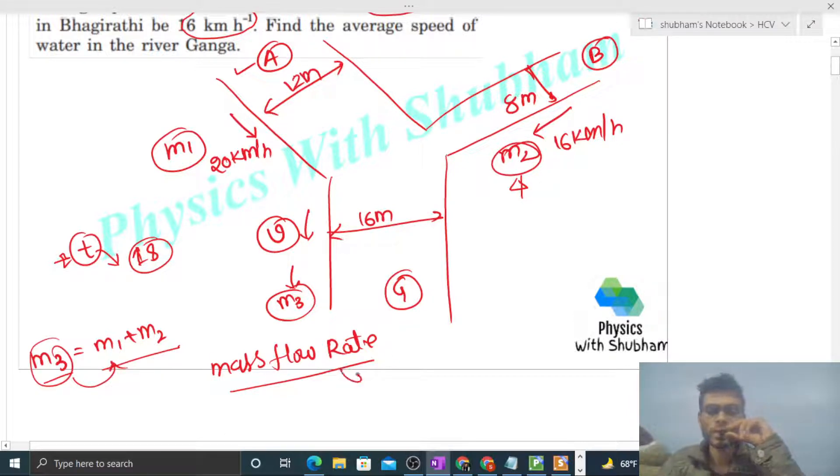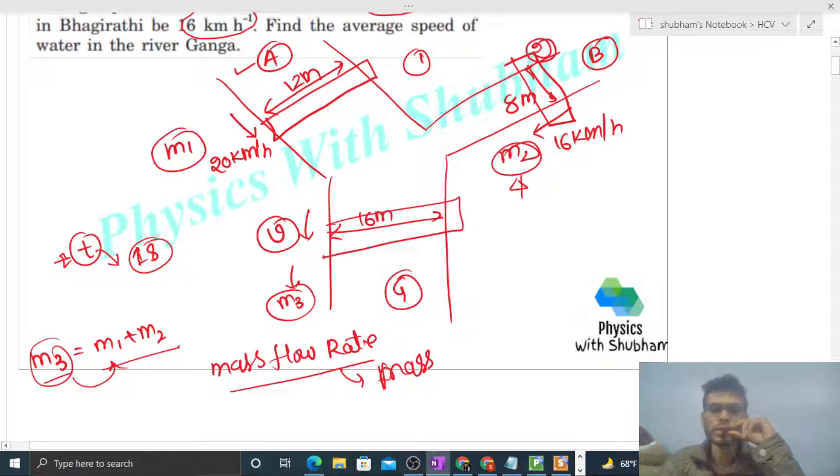We can also call this mass flux, meaning how much mass of water passes through a given cross section in one second. Let's say this is cross section one, this is cross section two, and this is cross section three. Then we can say mass flux from cross section one m1 plus m2 should equal m3.